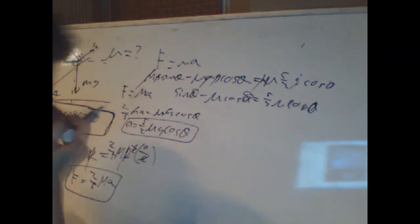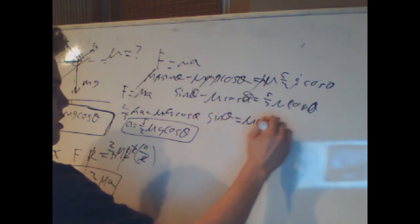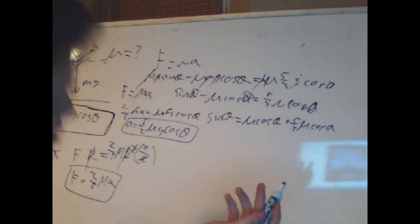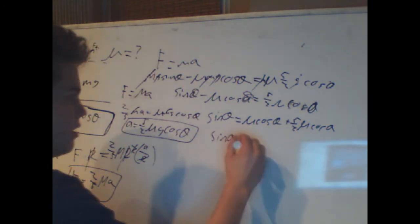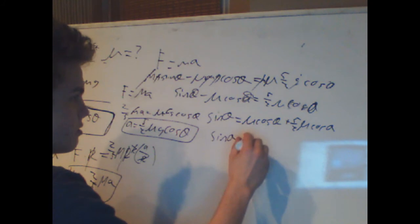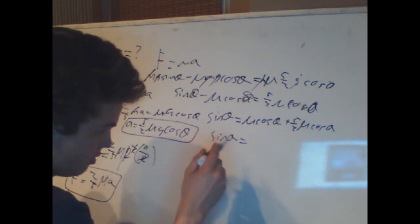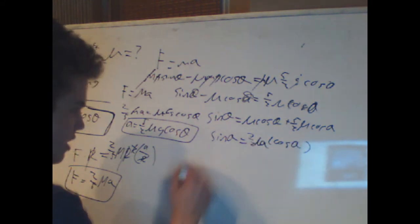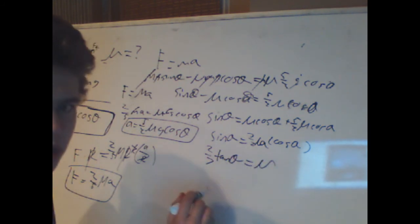So all you have to do is solve for mu. We move these mu's over to the same side. Sine theta equals mu cosine theta plus 5/2 mu cosine theta. We can factor out a mu. Sine theta equals, we can factor out 5/2 plus 1, so we can make this 2/2. So it's 7/2 mu cosine theta divided by cosine theta. So we get 2/7 tangent of theta equals mu. And that's your answer.